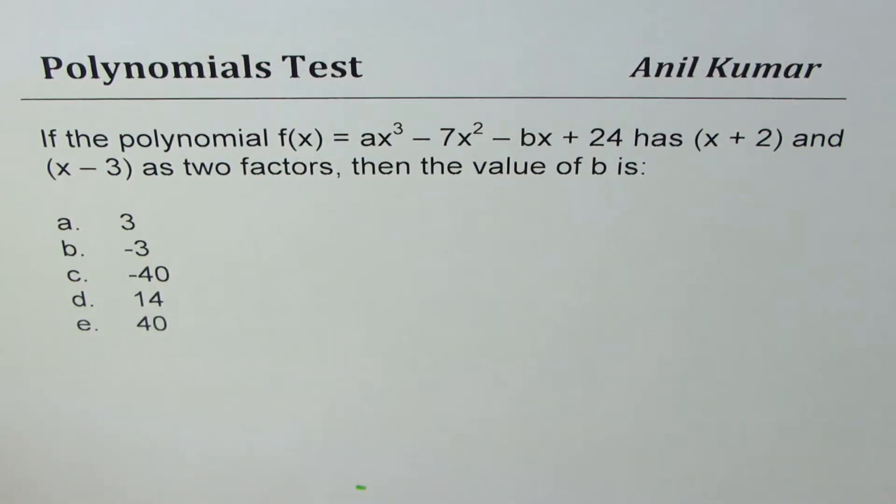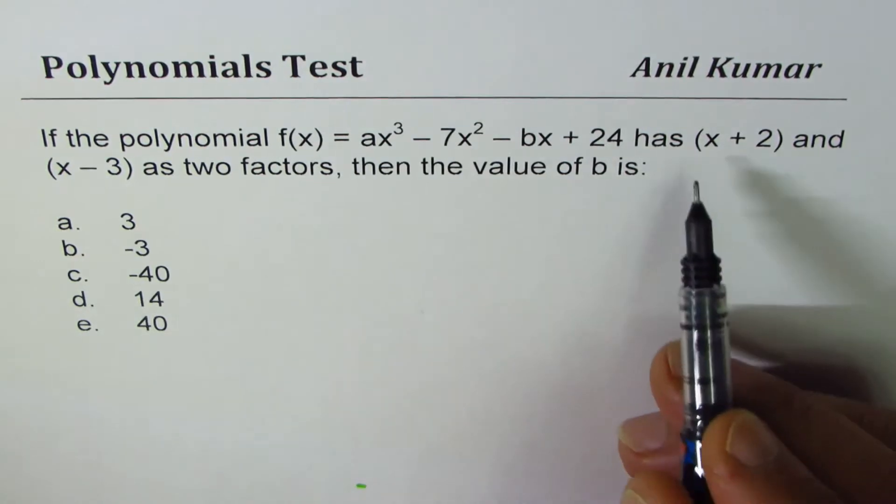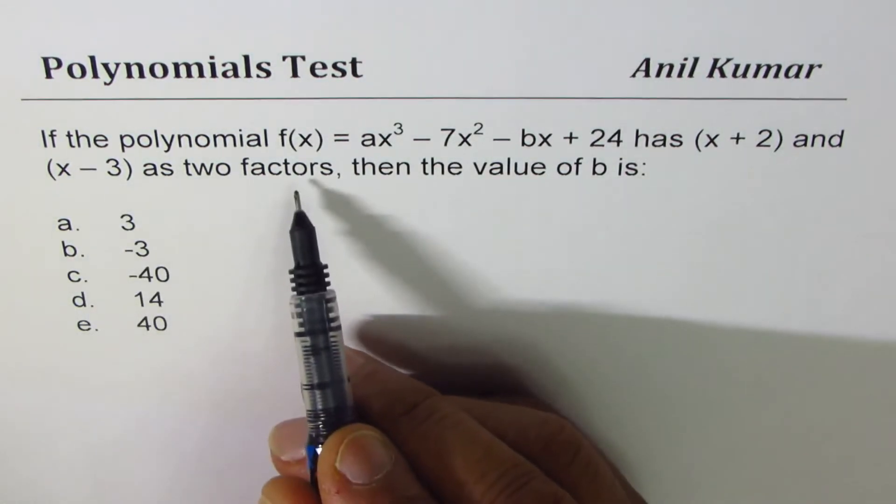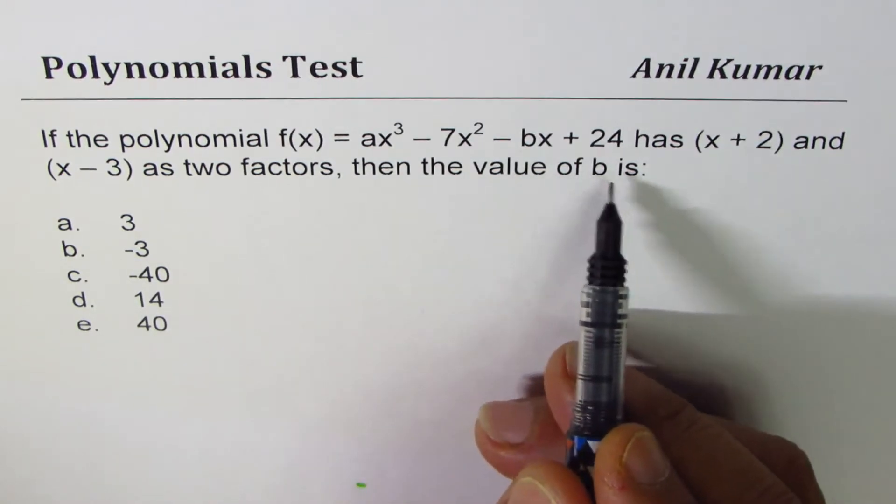I'm Anil Kumar, sharing with you a test question on polynomials. The question is, if the polynomial f(x) = ax³ - 7x² - bx + 24 has (x + 2) and (x - 3) as two factors, then the value of b is?